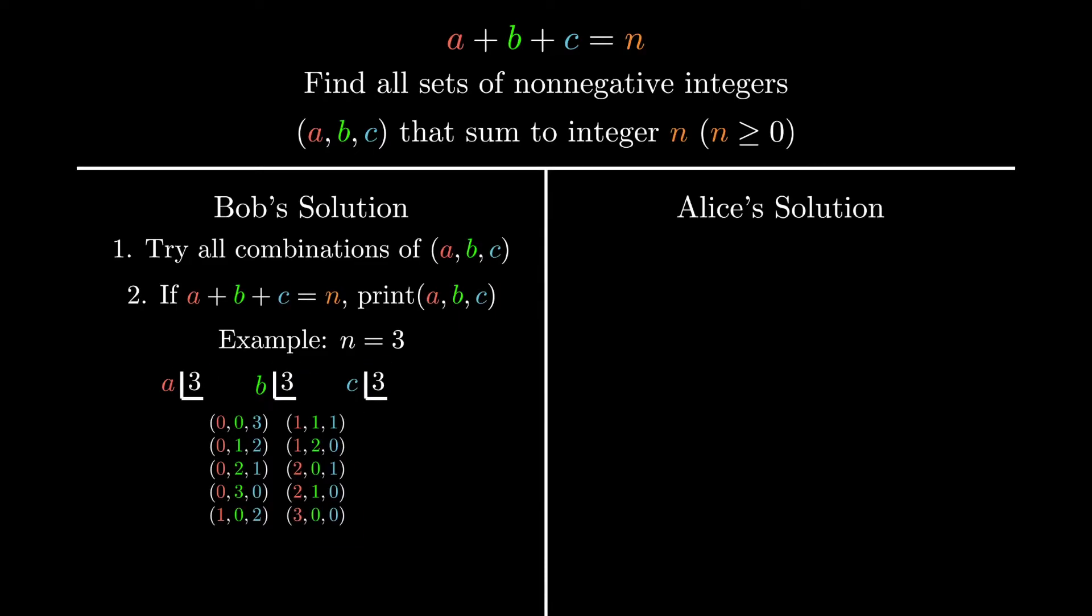Alice spends a little bit more time trying to solve this problem and comes up with the following approach. She realizes that since n is a specific value that's given to us, she can actually try every combination of A and B up to n, and then for each combination, set C to be equal to n minus A plus B. If the C value set is non-negative, then she has found a valued combination. Here's how her algorithm plays out for the same n equals 3 input.